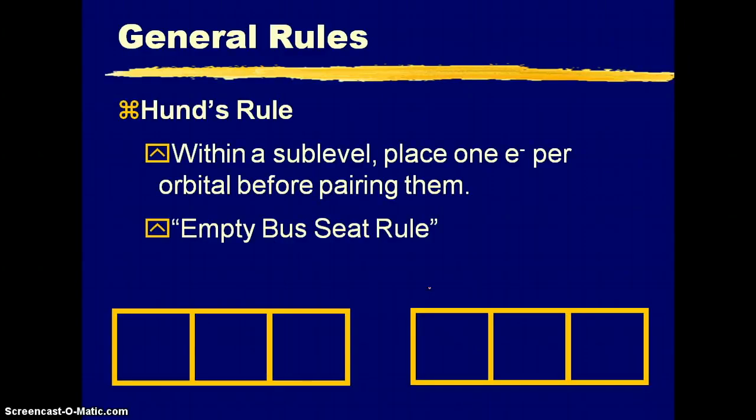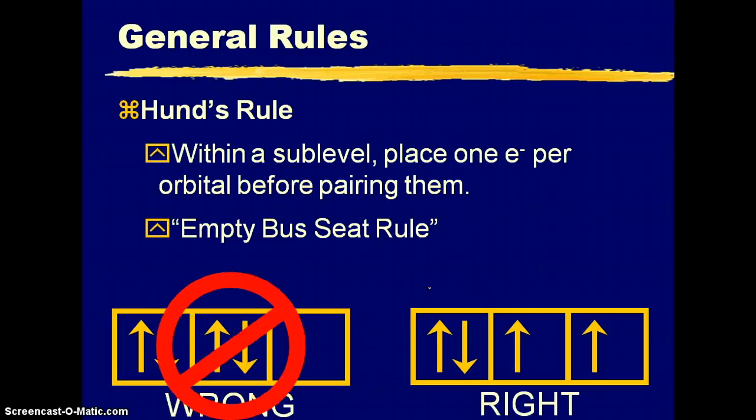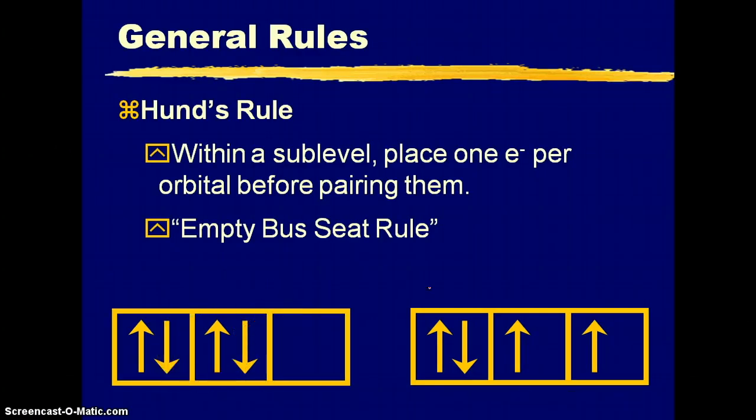And we also have to contend with what's called the empty bus seat rule or Hund's rule. So basically that says that when you have multiple sublevels per energy level, like in the P, Ds, and Fs, that each individual orbital, each box, will get one electron before anybody gets a pair.